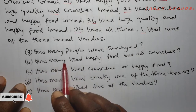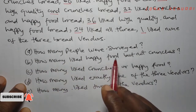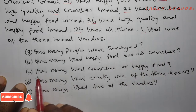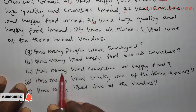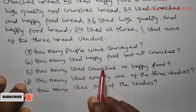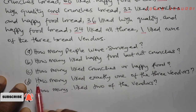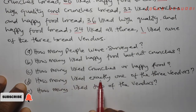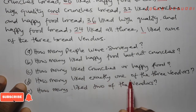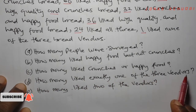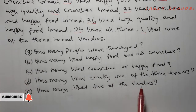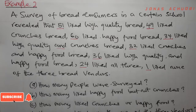B: how many liked happy food but not crunches? C: how many liked crunches or happy food? D: how many liked exactly one of the three vendors? E: how many liked two of the vendors?